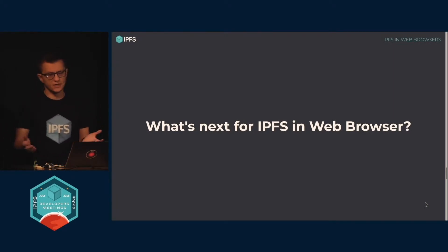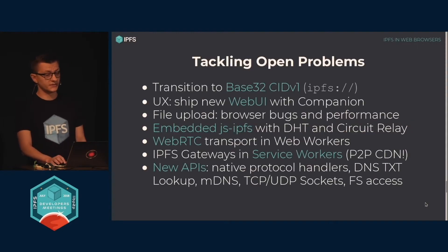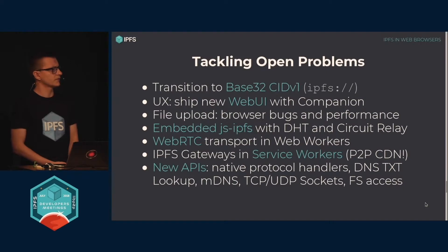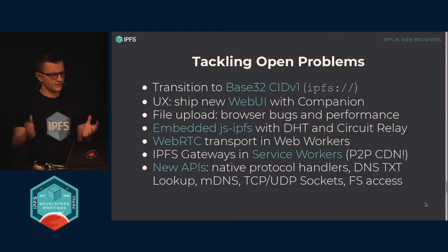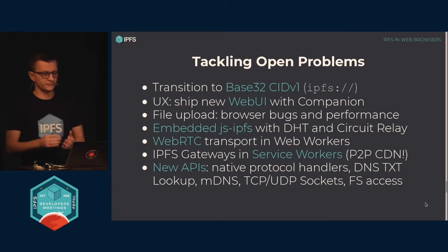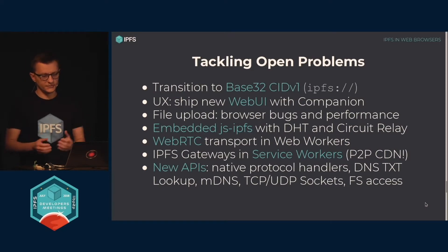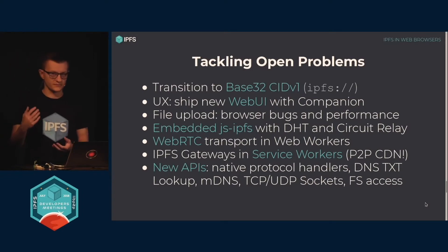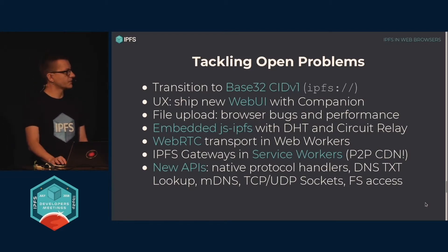You may ask: is the browser extension all the IPFS in web browsers group is doing? No — we are generally tackling a lot of open problems that JS IPFS and generally IPFS as a protocol and ecosystem is facing in the web browser context. One thing I want to especially highlight today is moving to the base32 CID version one encoding. We need that if we want to have a presence in browsers. We need a proper way to represent the authority component so that the origin-based security perimeter is respected by browsers. Our content ID — the root content hash — will be the authority component. I hope we'll move this forward this week.